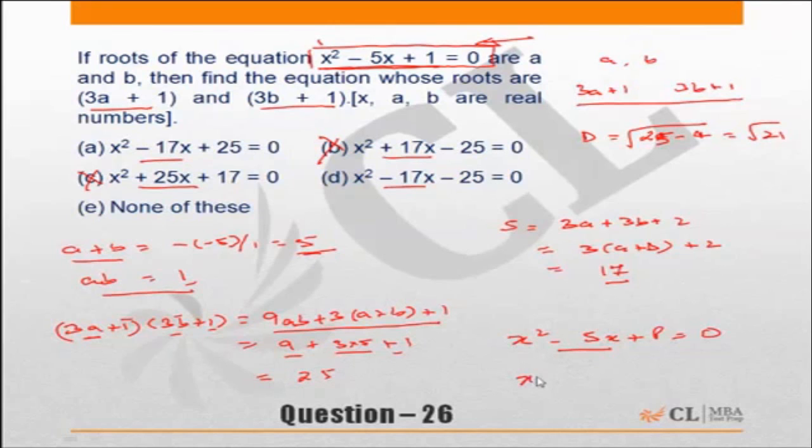So my equation has to be x square minus 17x plus 25 equal to 0. Correct answer is choice a. So please remember, if the equation is simple and you are getting real natural numbers as roots, then straightaway factorize, get the roots, the new roots and the equation.